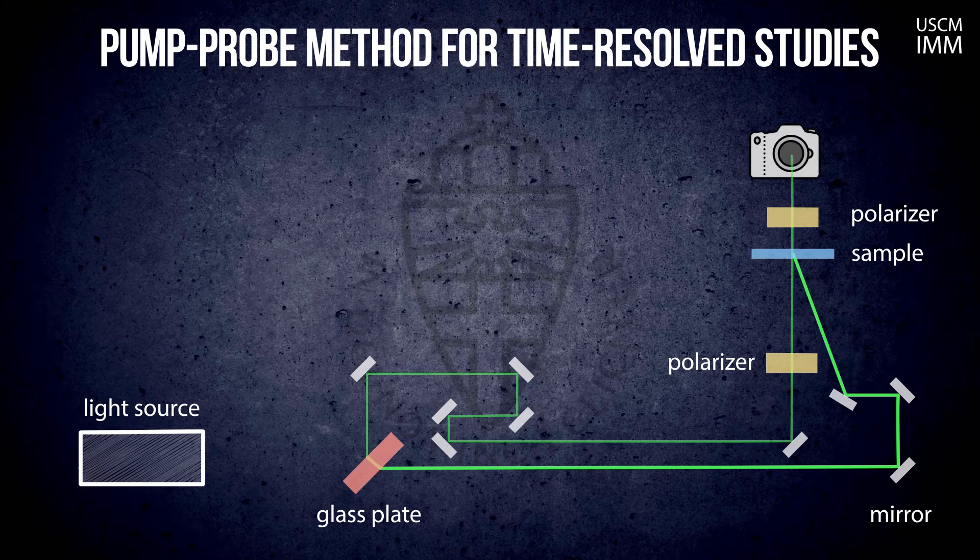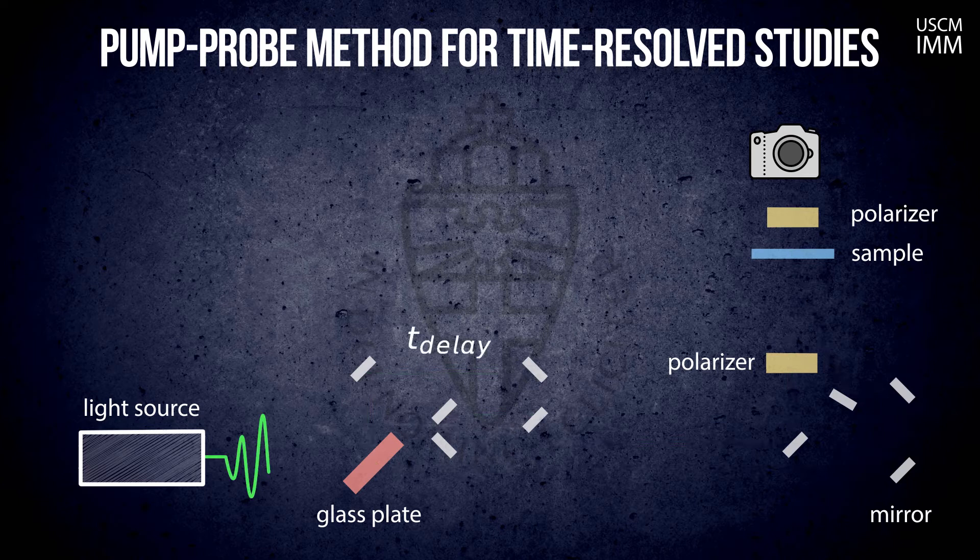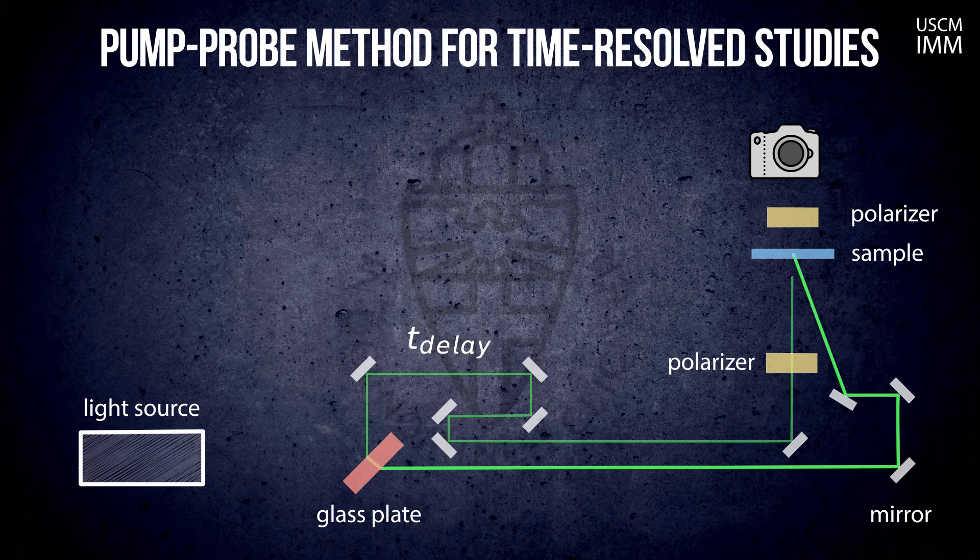By moving a couple of mirrors in the probe path, we can adjust the traveling time of the probe flash from the splitter to the sample and thus influence the time delay between the moments when the sample is heated by a pump and a probe respectively.